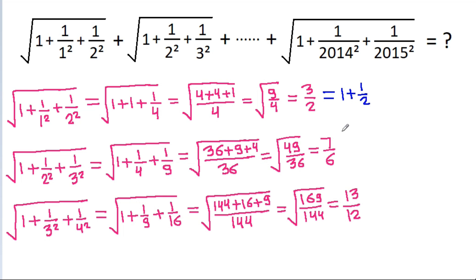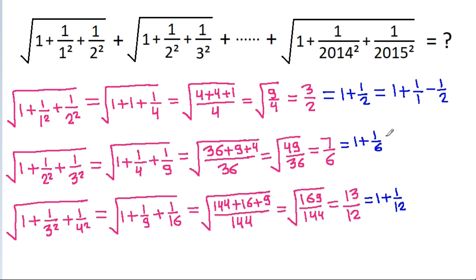Observing the pattern: 3 by 2 is 1 plus 1 by 2, and 7 by 6 is 1 plus 1 by 6, and 13 by 12 follows similarly. In general, the square root of 1 plus 1 by n squared plus 1 by (n+1) squared equals 1 plus 1 by n minus 1 by (n+1).